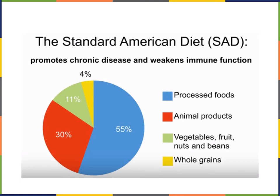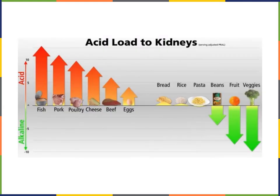Here's a pie chart showing the Standard American Diet. Just like any pie chart, it shows a percentage visually in terms of the proportion of the pie and also with percentages. Here's a bar chart showing acid load to kidneys — it shows the level of acid, both alkaline and acid, on the load to kidneys based on the type of food you're eating.